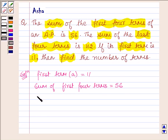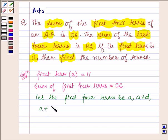So let the first four terms be A, A plus D, A plus 2D, and A plus 3D, where D is the common difference.